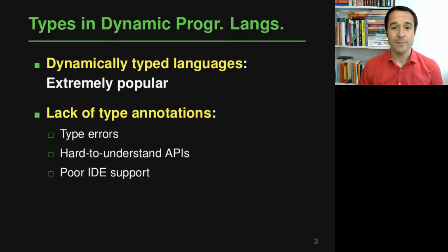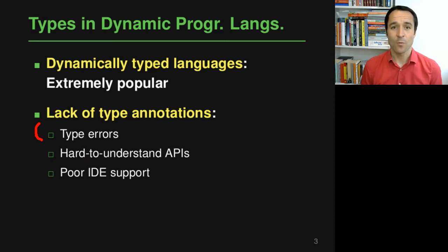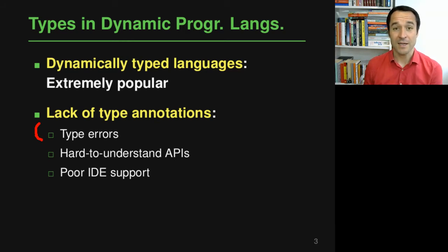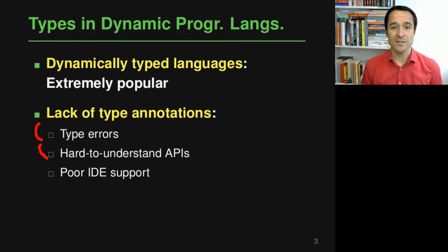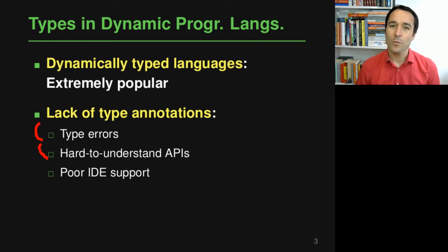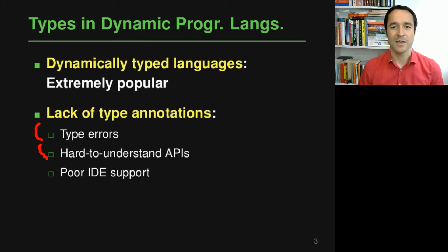This lack of type annotations has a couple of negative consequences. One is that you may have type errors you won't detect while looking at the code — there's no compiler or type checker to tell you — so you may only detect them later while your code is running, possibly in production. Another problem is that in the absence of type annotations it may be pretty hard to understand some APIs, since you don't know what parameters to pass or what return value to expect.